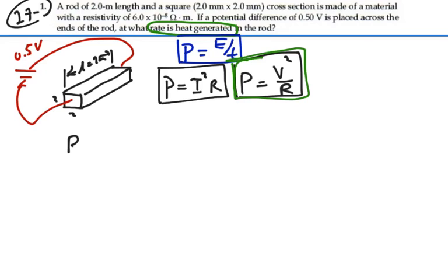The resistance equals the resistivity times the length over the cross-sectional area. In this case, that's a resistivity of 6 times 10 to the minus 8, length of 2 meters, and cross-sectional area of 2 millimeters by 2 millimeters, which is 2 times 10 to the minus 3 meters squared.